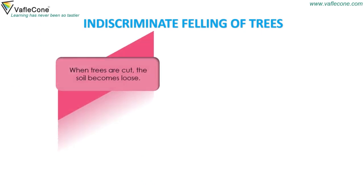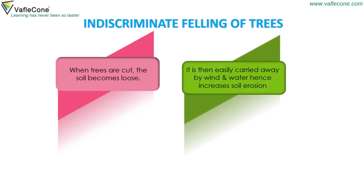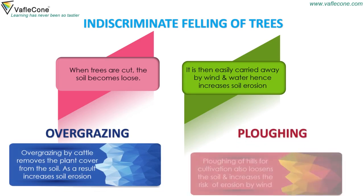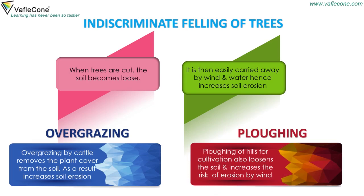Indiscriminate felling of trees: When trees are cut, the soil becomes loose. It is then easily carried away by wind and water, hence increasing soil erosion. Overgrazing: Overgrazing by cattle removes the plant cover from the soil, which increases soil erosion. Plowing: Plowing of hills for cultivation also loosens the soil and increases the risk of erosion by wind.